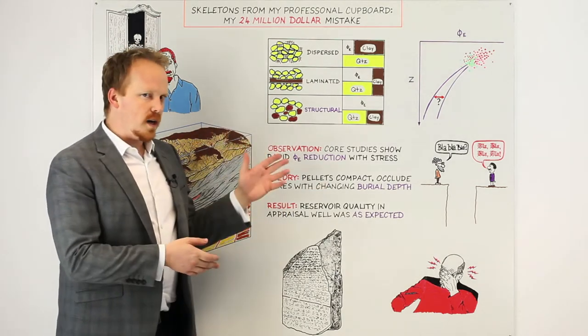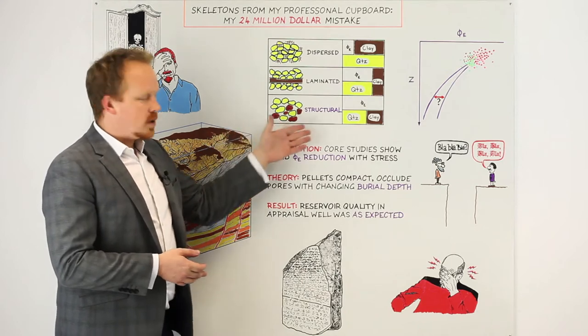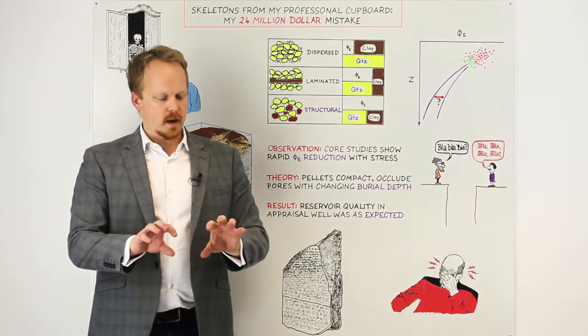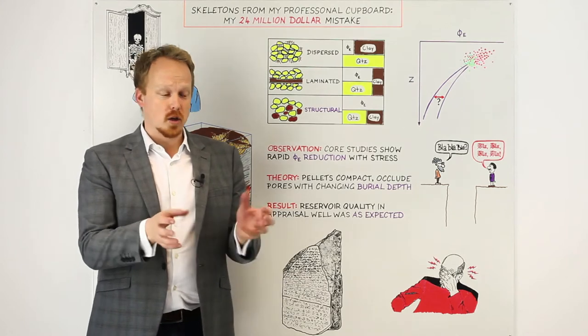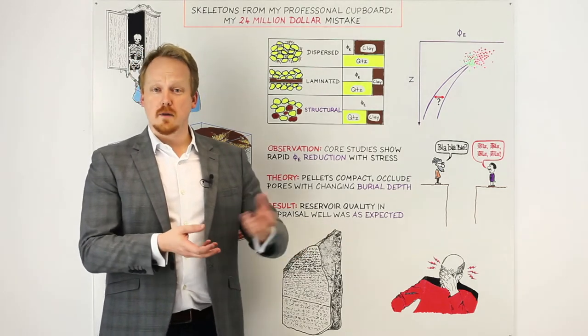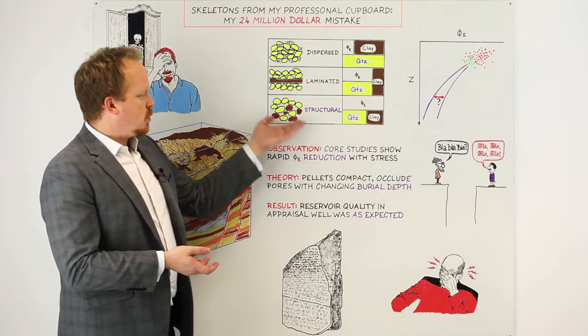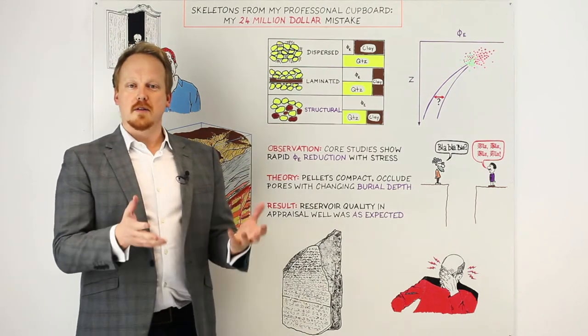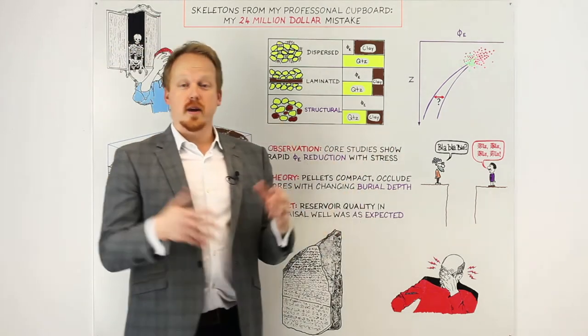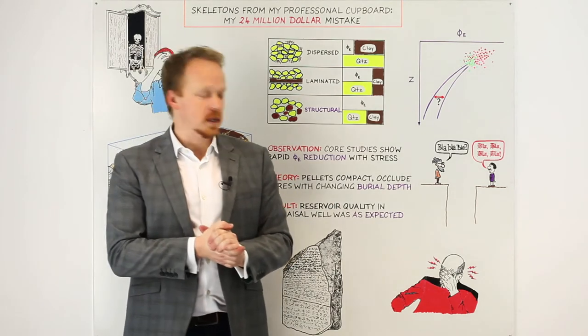Structural clays, though, few of us had ever encountered, where essentially bioturbation had been so pervasive that these little creatures had essentially concentrated all of the clay into fecal pellets and it was providing framework support for the reservoir. So despite a 30 to 40 percent clay content, we had fantastic porosity and permeability.